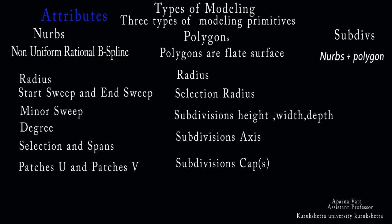Polygons have 12 primitives: sphere, cube, cylinder, cone, plane, torus, prism, pyramid, pipe, helix, ball, and solid. Polygons are flat surfaces defined by four vertices or points, and are fast-rendering surfaces. Attributes of polygon primitives include radius, section radius, subdivision height, width, depth, subdivision axis, and subdivision caps.